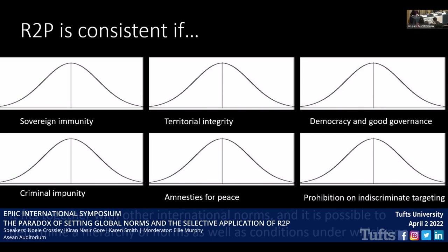Moving to the first part of the definition — agreement or harmony of parts or features to one another or a whole — in terms of the consistency of R2P as a norm, we'll talk much more about this dimension later throughout the course of the panel. There are many different things that might qualify as norms or habitual behavior in international practice. Where does R2P fit in, and where does it fit in the hierarchy of norms? In what circumstances is it appropriate, and what do we actually observe happening in practice? There is much more work to be done in figuring out which other norms take precedence and in which circumstances.